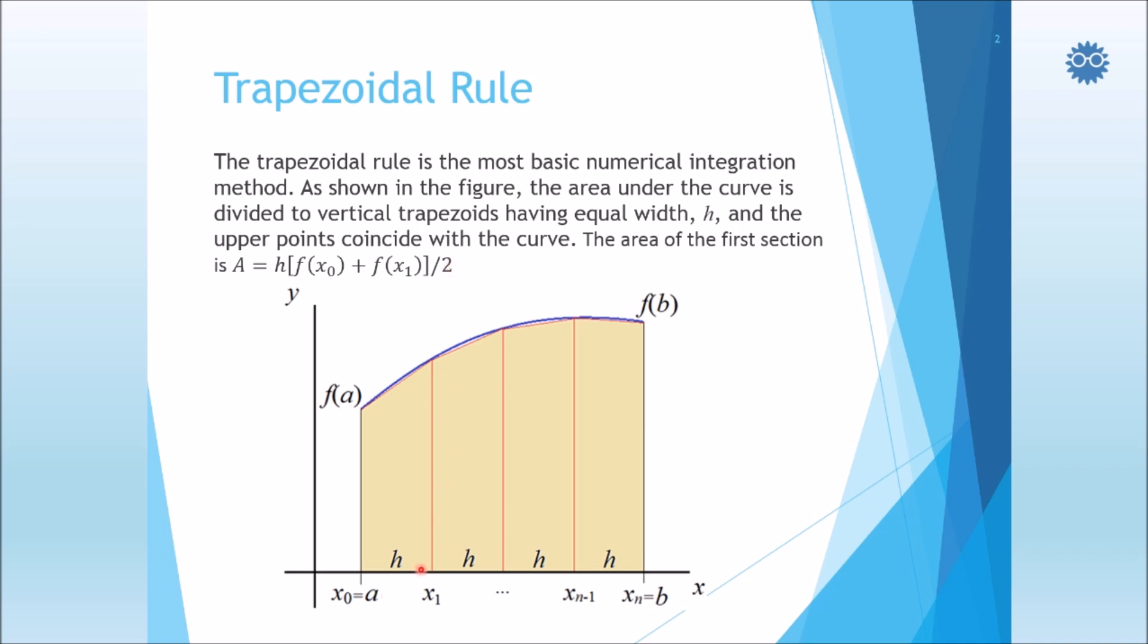Or simply we can say that it is equal to h multiplied by the average of the two sides of the trapezoid. Now here we notice a space between the upper side of the trapezoid and the actual curve of the function. This space represents the error of this method.